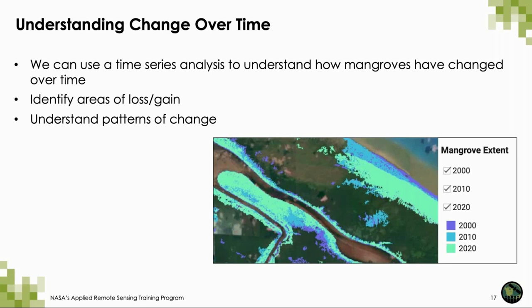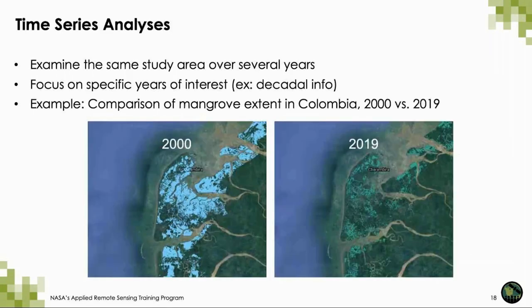This image is an example of what we are hoping to end up with — a zoomed-in image of mangrove extent in Guyana for 2000, 2010, and 2020. For time series analysis, we are going to examine the same study area over several years, focusing on specific years of interest. Depending on your study, you may be interested in decadal or annual information. For example, this is a comparison of mangrove extent in Colombia in 2000 on the left and 2019 on the right.